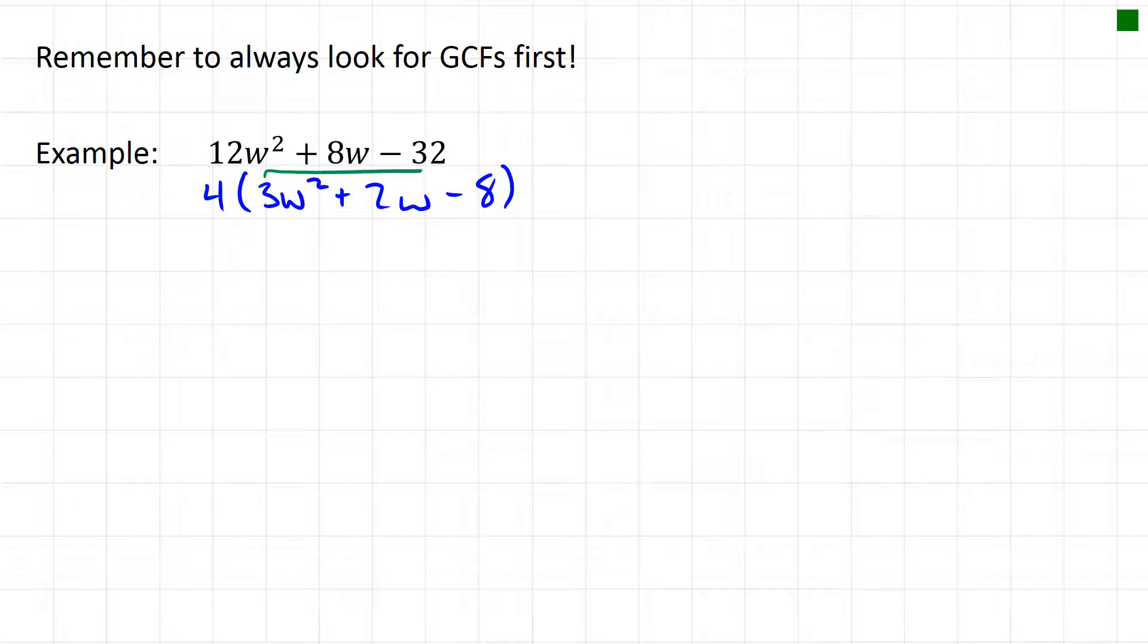So now this is just a messy trinomial that I'm going to have to factor just like we learned. Multiplying a and c I get negative 24, so I need two factors that multiply to negative 24 and add to plus two. We could try 12 and 2, but how about 4 and 6? If I do negative 4 positive 6, they add to 2 and they multiply to negative 24, so let's use those.